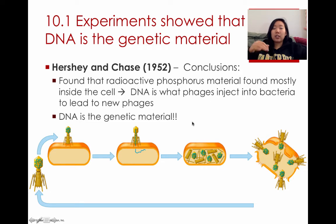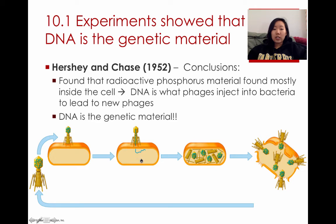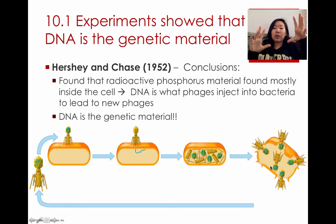DNA is what the phages injected into the bacteria. To recap how bacteriophages replicate: they land on top of the bacteria, and the DNA material inside their capsid head gets injected into the bacteria. This takes over the bacterial system, and the bacteria starts to replicate viruses over and over again. Once it's full, the bacterial cell lyses and explodes, and all of those bacteriophages leave the cell.